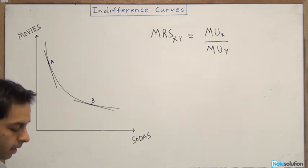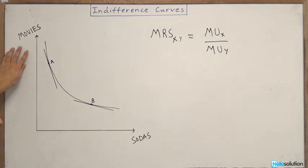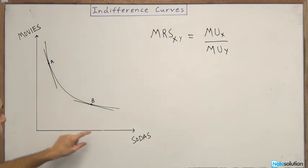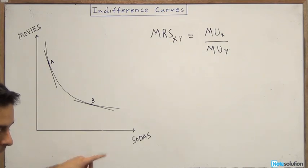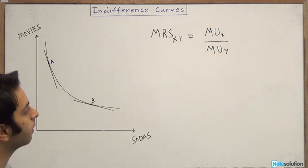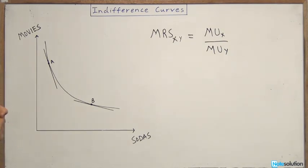So, the question says: an indifference curve diagram has movies on the vertical axis and sodas on the horizontal axis. As the consumption of sodas increases, the marginal rate of substitution [blank], and the indifference curve becomes [blank]. So first of all, to solve this question,